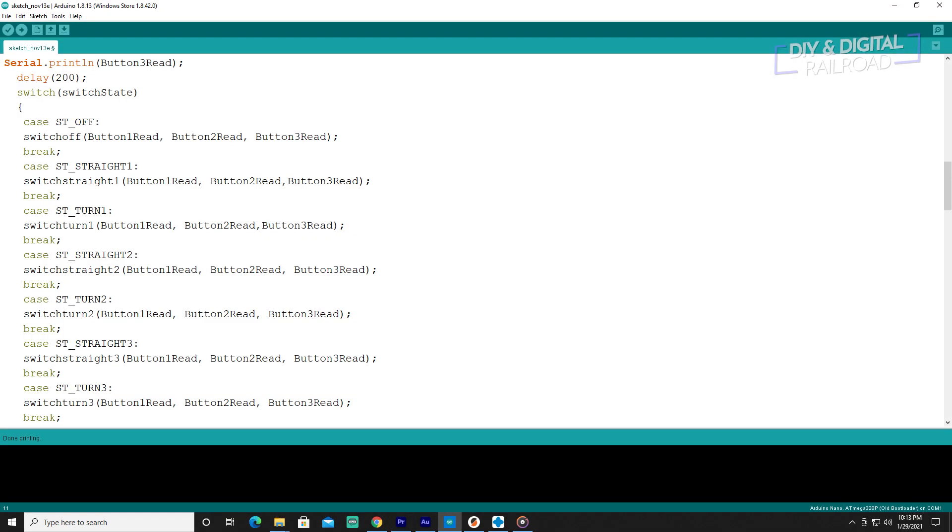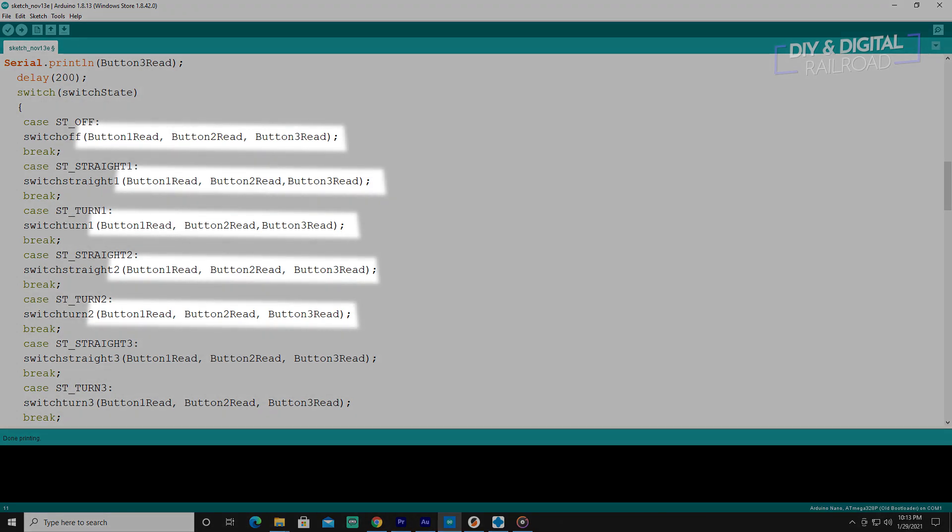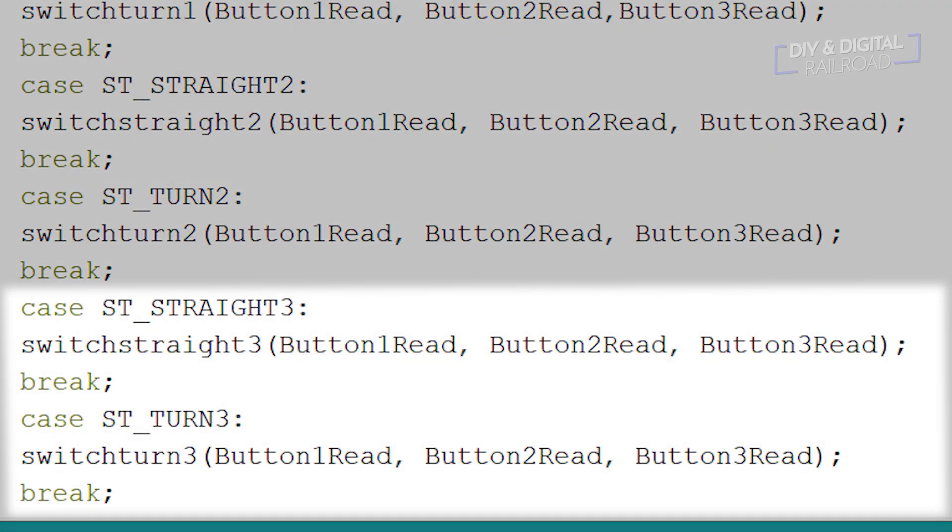Now we can head into our switch states. For each of the switch states in their parentheses you'll need to add button3read. You'll then need to add a case ST_STRAIGHT3 with switch straight3 and case ST_TURN3 with switch turn3.